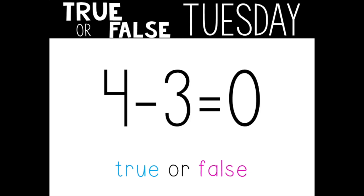Here's our next equation. True or false? Four minus three equals zero. Show me with your thumbs. Great job! You're right! This one's false. I know four minus three doesn't equal zero. What would you change to make this true? Turn and tell your grown-up. I would change the answer. Four minus three does not equal zero — four minus three does equal one.